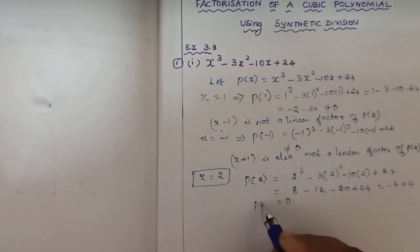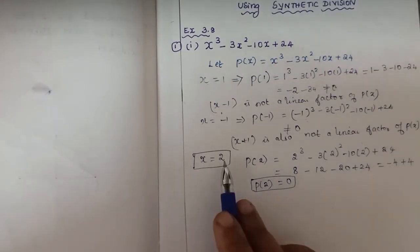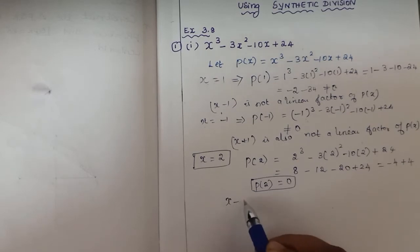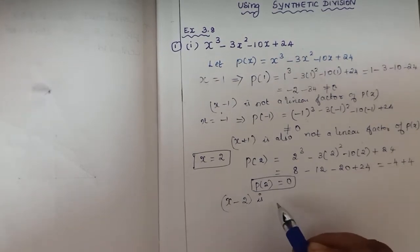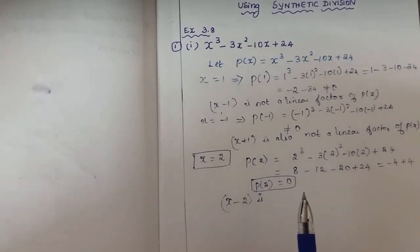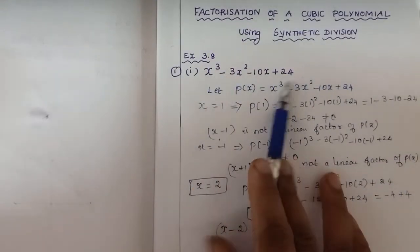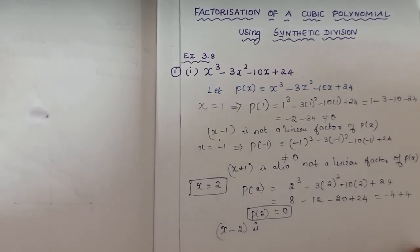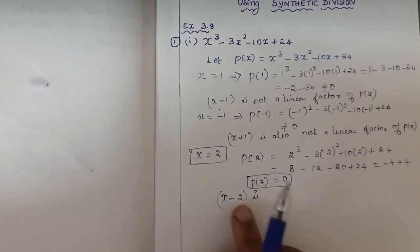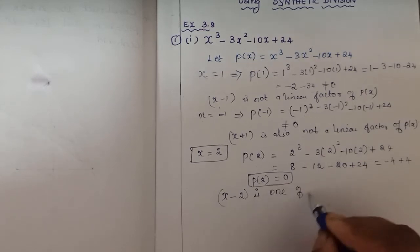So p(2) equals 0. Since the value of the polynomial is 0 when x equals 2, we got a linear factor. So x minus 2 is one of the linear factors of the cubic polynomial — one of the three linear factors. A cubic polynomial of degree 3 has 3 linear factors. Factorization means breaking down the polynomial into smaller linear polynomials. We found one linear factor using trial and error method.